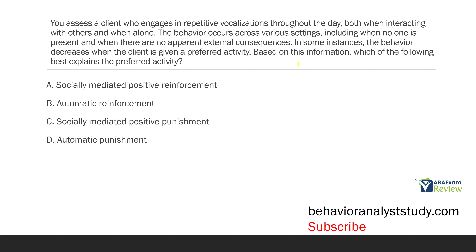You assess a client who engages in repetitive vocalizations throughout the day, both when interacting with others and when alone. The behavior occurs across various settings, including when no one is present and when there are no apparent external consequences. In some instances, the behavior decreases when the client is given a preferred activity. Based on this information, which of the following best explains the preferred activity? We have to read carefully and answer only what is being asked — what explains the preferred activity? The key information is the behavior decreases when the client is given a preferred activity.